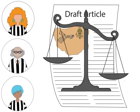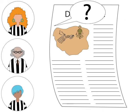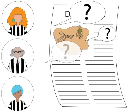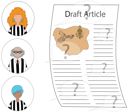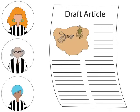Each reviewer evaluates the article by asking questions to judge the quality and significance of the research. Questions like: What is this research about? Is it interesting? Is it important? Is the methodology sound? Are the conclusions logical? And are the findings original? Based on the answers to these questions, the reviewers decide whether the article is worthy of publication in the journal.